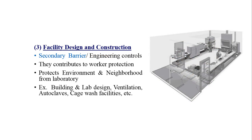The third important part of biosafety is facility design and construction, also called secondary barriers or engineering controls. Safety equipment is the primary barrier, while facility design is the secondary barrier. These protect workers and the surrounding environment from the laboratory. Examples include building and lab design, ventilation, autoclave, cage systems, and other lab facilities.